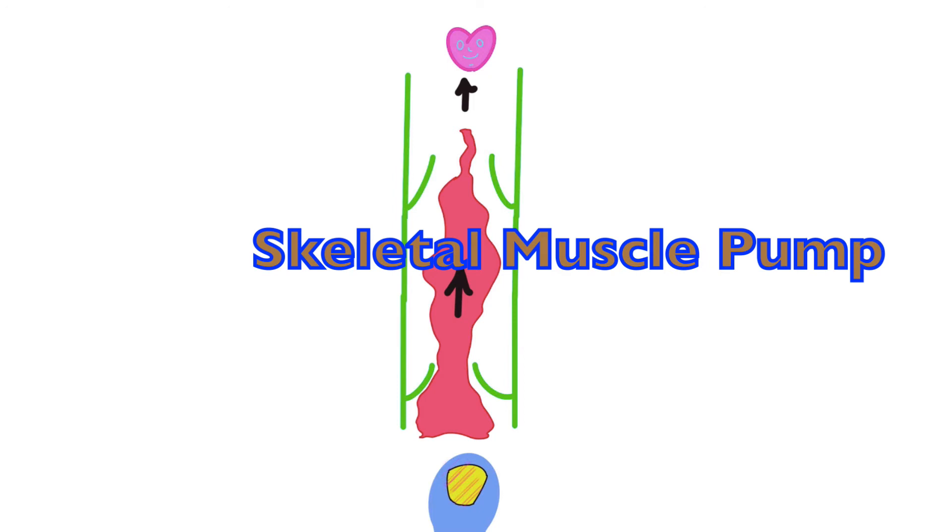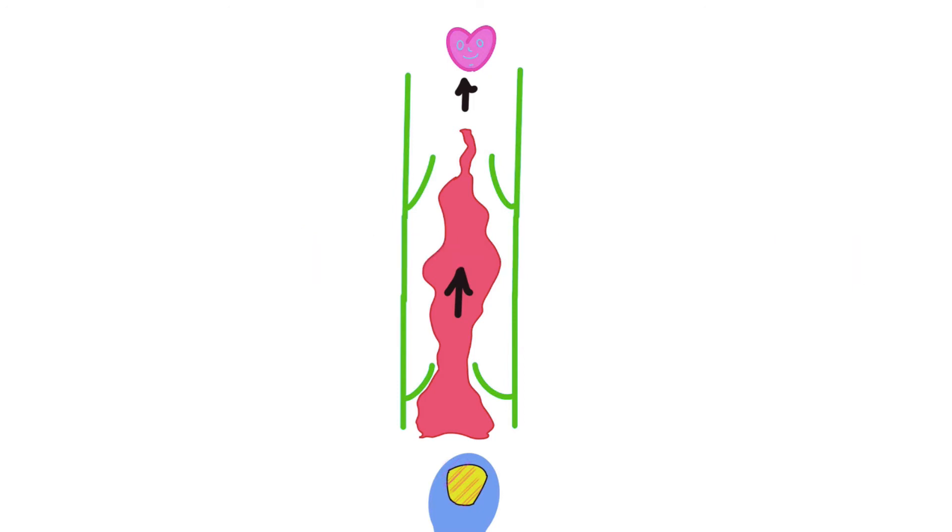Squeezing on the blood vessels decreases the volume of the blood vessel, increases the pressure, allowing blood to flow. So as we see in this image right here in green, tunica intima composed of endothelium. And within that endothelium, we have these valves that are created, somewhat akin to the semilunar valves of the pulmonary artery and the aorta.